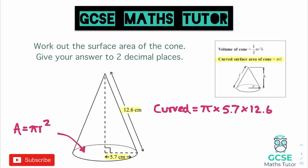The question I showed you at the start does have a few extra steps, but let's start with this one. Pi times 5.7 times 12.6 on the calculator - don't forget to turn that back into a decimal - and it comes out as 225.6291844. That's the curved surface area. Notice I've written down all the decimals there, because when we come to adding these two pieces together, I don't want to get any rounding errors before getting my final answer.